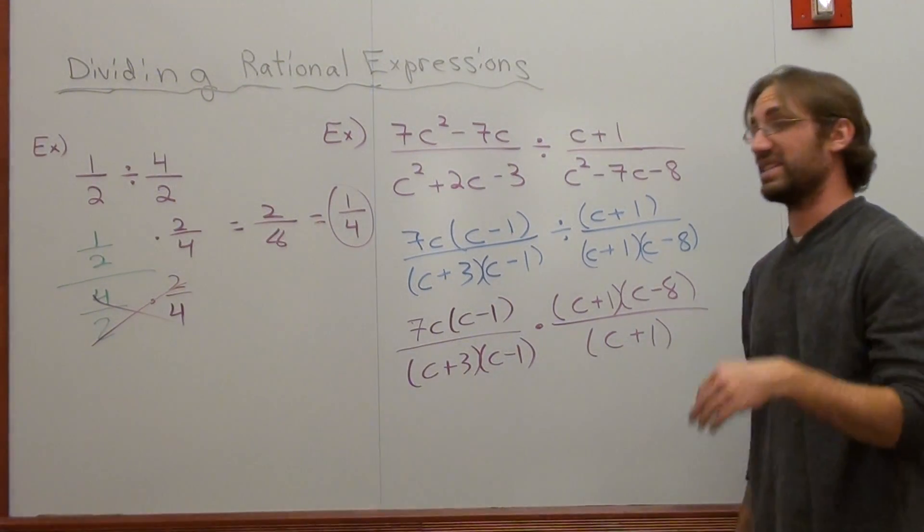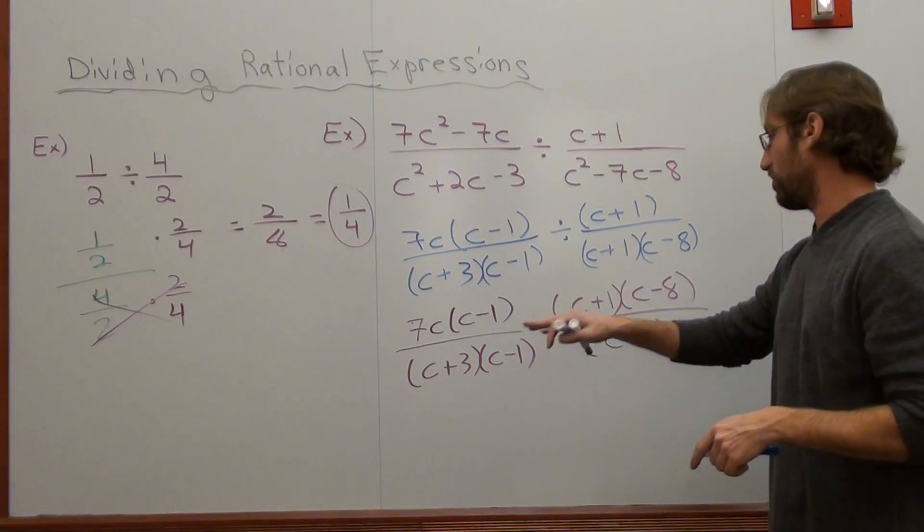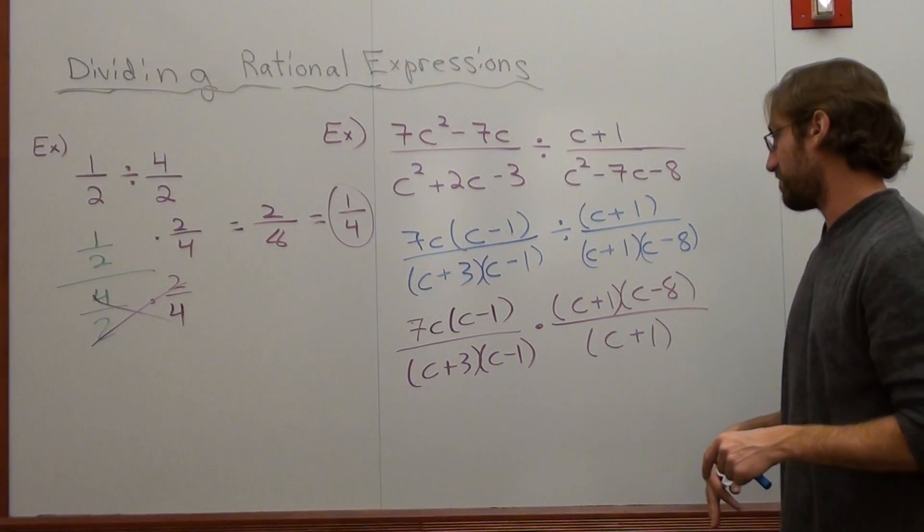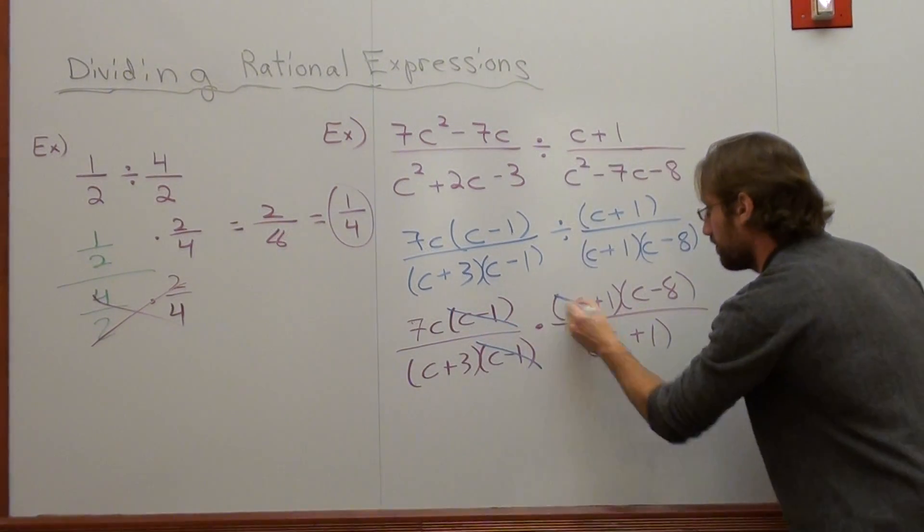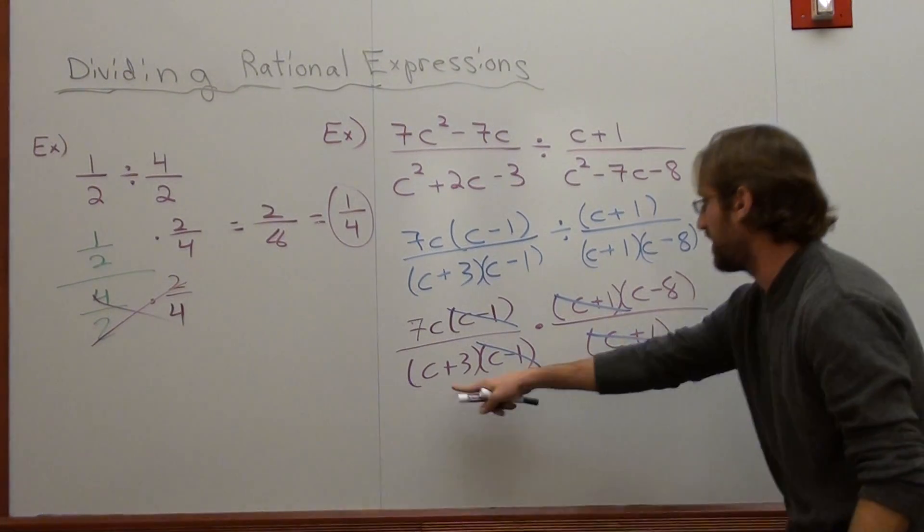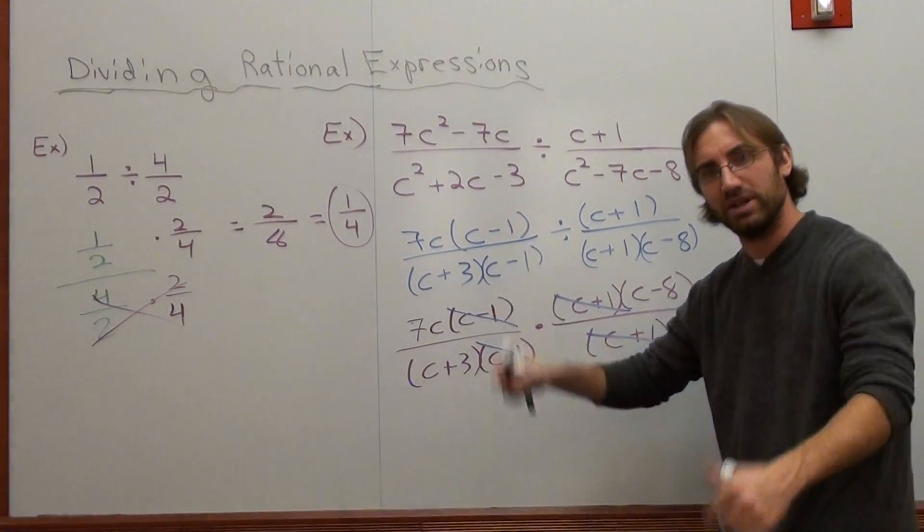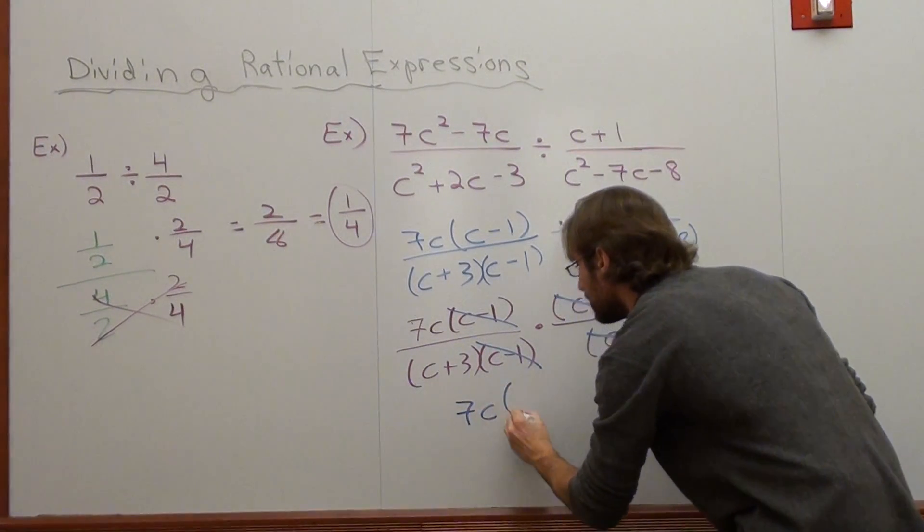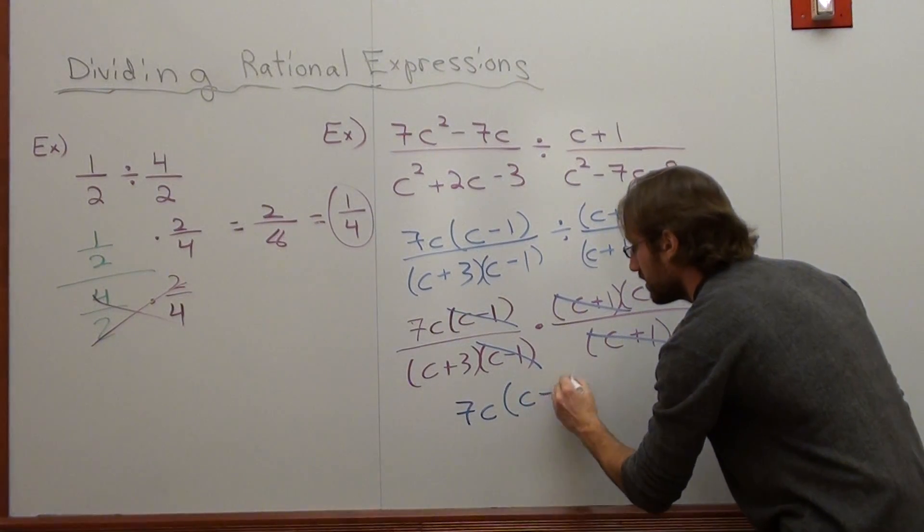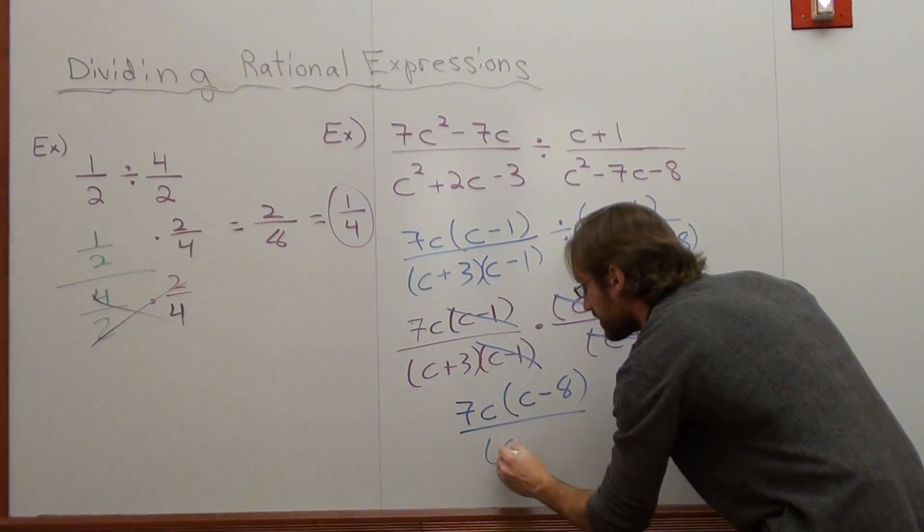Now, this is my favorite step. This is the step that I absolutely love doing. Because I made something that looked terrible into something less terrible. Yeah, no c minus 8's on the denominator. No c plus 3's. That's one term. Can't divide it by two terms. So, what I got is 7c times c subtract 8, times the quantity c subtract 8, over c plus 3.